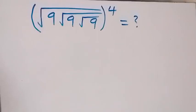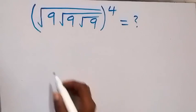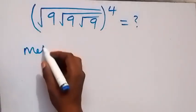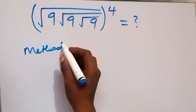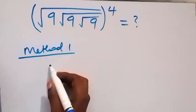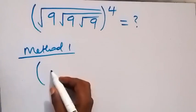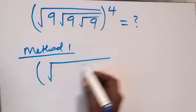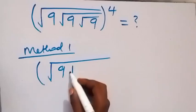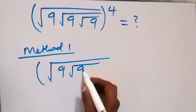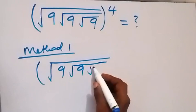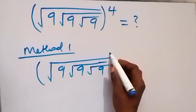Hello, you are welcome. How to solve this nice math problem involving square roots. From here we have square root of 9, then square root of 9, and square root of 9 raised to power 4. Let's use Method 1. We can write this again as square root of 9, then inside that again square root of 9, then we also have square root of 9 which is raised to power 4.